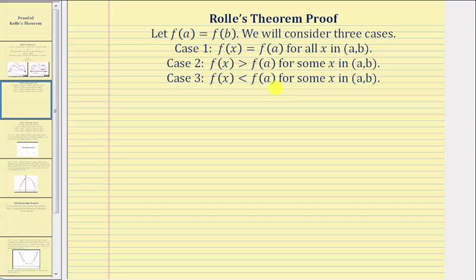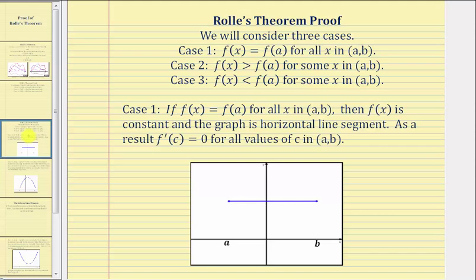For case one, if f of x equals f of a for all x in the open interval, then f of x is constant, and the graph is a horizontal line segment. As a result, f prime of c equals zero for all values of x equals c in the open interval from a to b. As an illustration, notice how f of x equals f of a, which also equals f of b for all x in the open interval — a horizontal line segment. At any point on this line segment, the tangent line would also be horizontal with a slope of zero, and therefore f prime of c equals zero for all x equals c in the open interval.